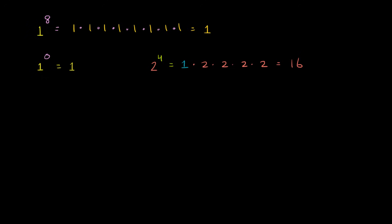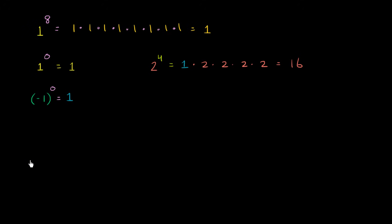Now let's try some interesting scenarios with negative numbers. Let's take negative 1 and raise it to the 0 power. Using our definition — you start with a 1 and multiply it by this number 0 times — that means we're just not going to multiply by this number at all, so you're just going to get 1.